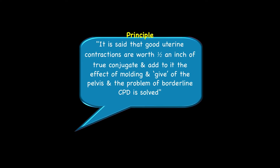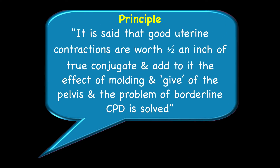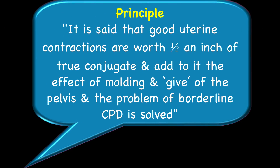The principle of trial of labor is as follows. It is said that good uterine contractions are worth half an inch of true conjugate, and add to it the effect of molding of the head and give of the pelvis, and the problem of borderline CPD is solved.